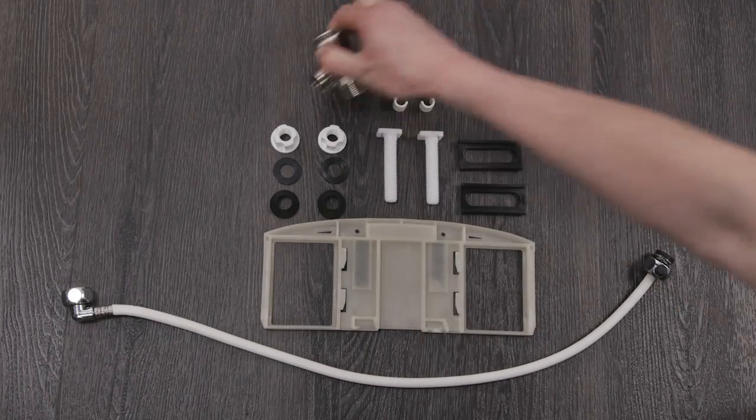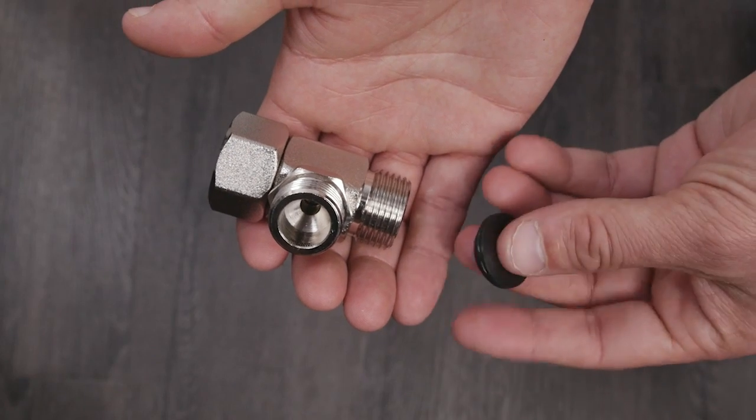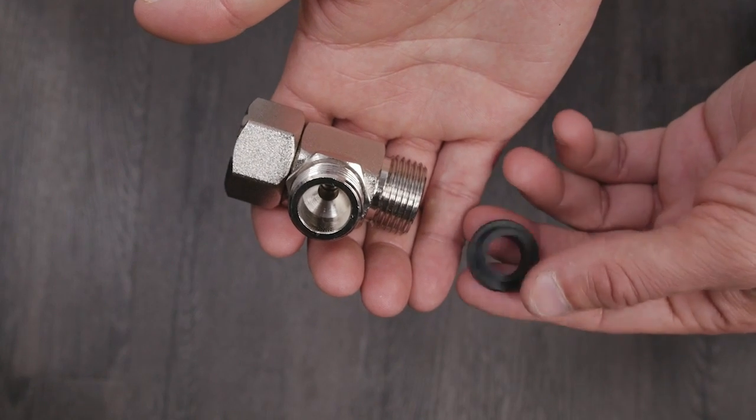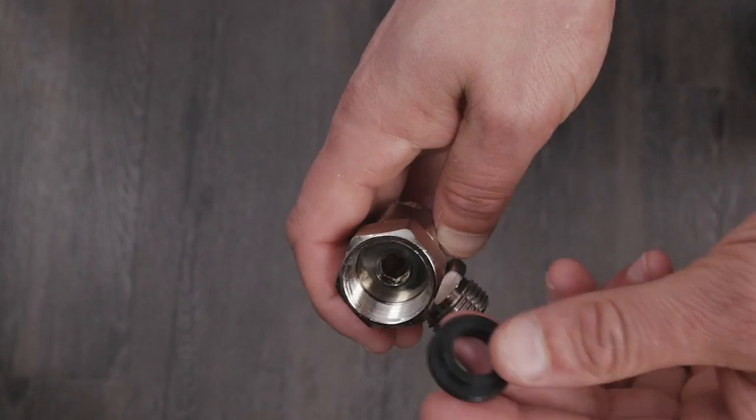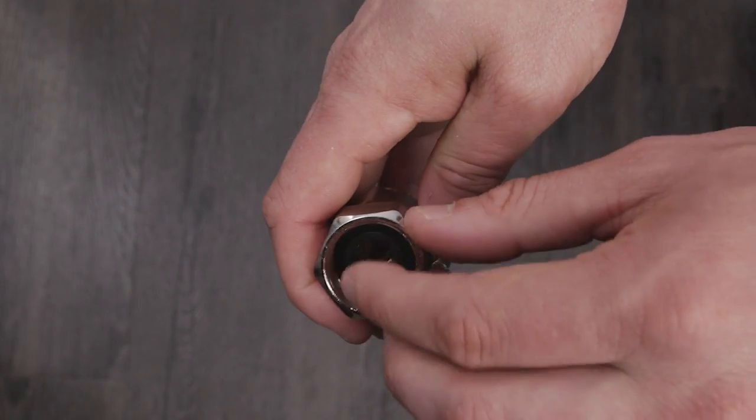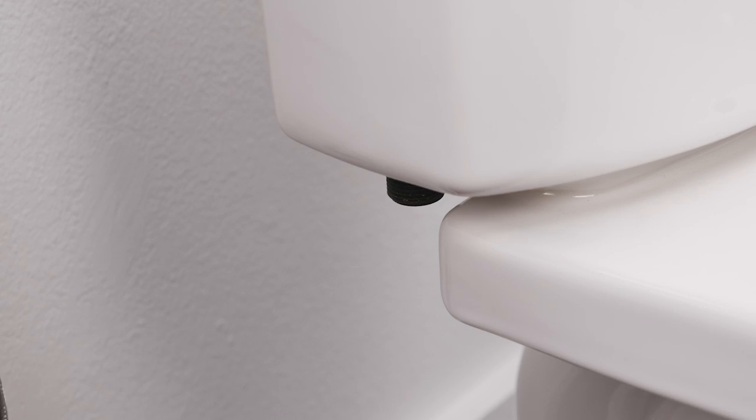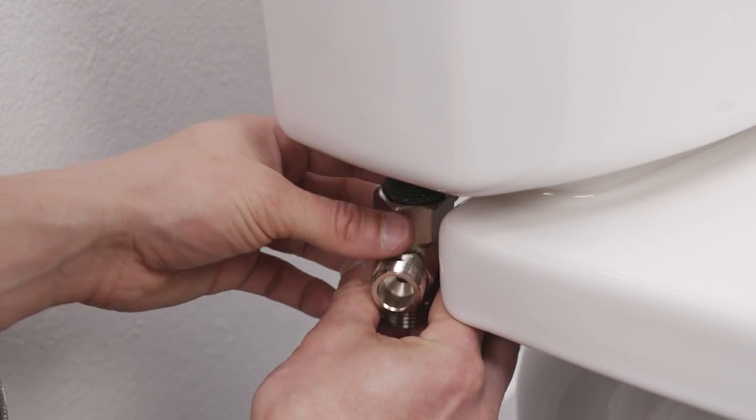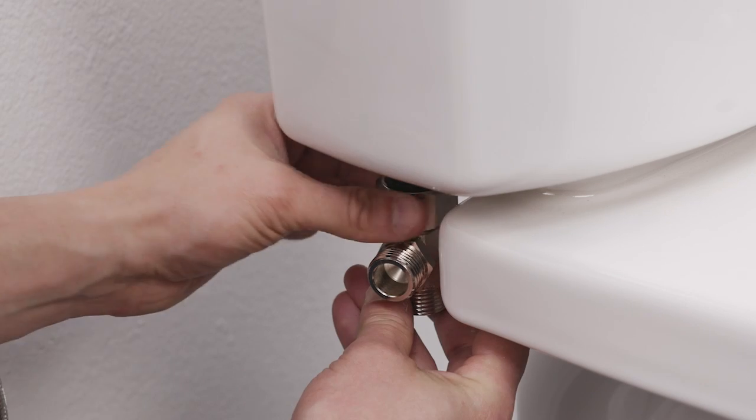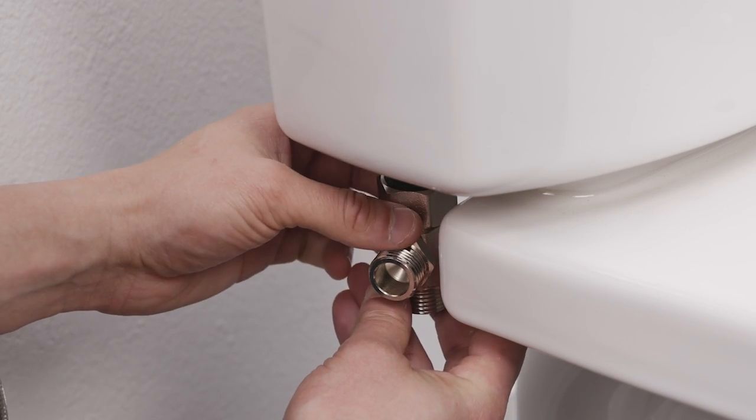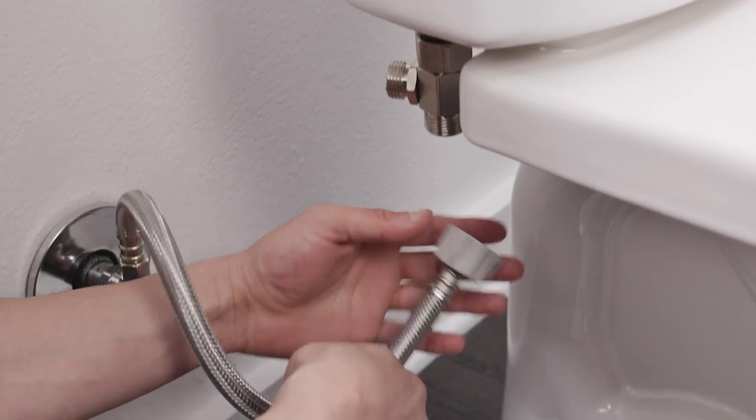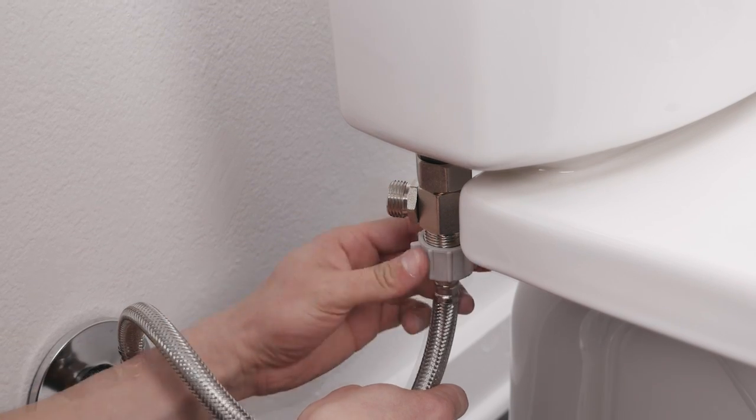Insert the black rubber washer into the T-valve, making sure the flat side of the washer is against the valve and the raised washer lip is face up. Connect the T-valve to the fill valve under the toilet tank. Reconnect the flexible supply line to the bottom of the T-valve.